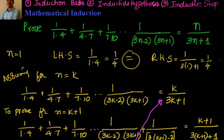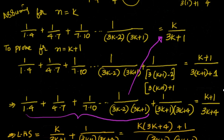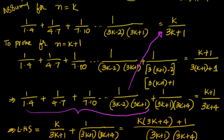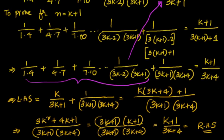To summarize: we proved it true for n=1, assumed true for n=k (sum of k terms = k/(3k+1)), then proved it for n=k+1 by adding the (k+1)th term. Starting from LHS, replacing the sum of k terms with k/(3k+1) and adding the (k+1)th term, simplifying gives the RHS. Hence proved by mathematical induction.